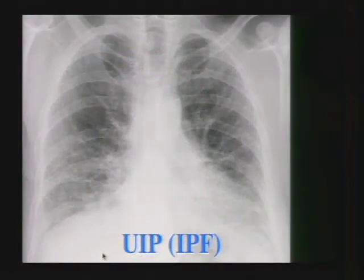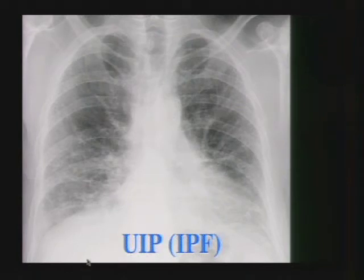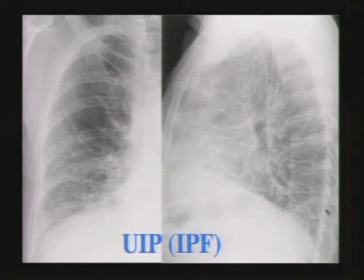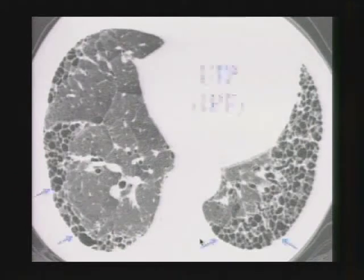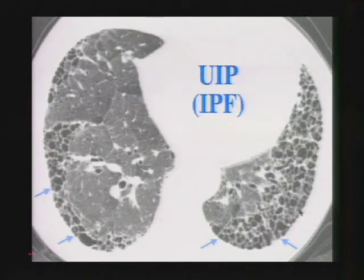On chest radiograph, UIP-IPF shows reduced lung volumes because of fibrosis and lung restriction, with a reticular abnormality at the lung bases. On a lateral view, the earliest and most typical finding is a reticular pattern in the posterior costophrenic angle. On high-resolution CT, we see honeycombing in a subpleural location — black holes immediately beneath the pleural surface. This person has moderate to severe honeycombing with multiple layers, and the distribution is subpleural, posterior, and lower lobe predominant.